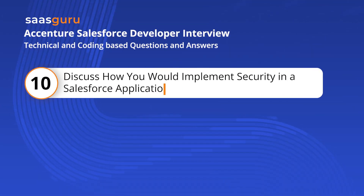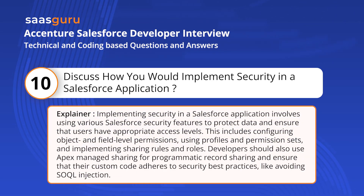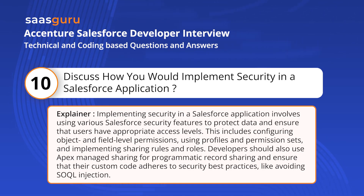Question 10: Discuss how you would implement security in a Salesforce application. Implementing security involves using various Salesforce security features to protect data and ensure that users have appropriate access levels. This includes configuring object and field-level permissions, using profiles and permission sets, and implementing sharing rules and roles. Developers should also use Apex-managed sharing for programmatic record sharing, and ensure that their custom code adheres to security best practices like avoiding SOQL injection.